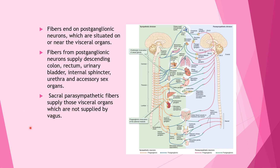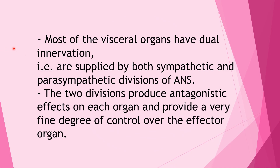Most visceral organs have dual innervation — they are supplied by both the sympathetic and parasympathetic divisions of the autonomic nervous system. The two divisions produce antagonistic effects on each other and provide a very fine degree of control over the visceral effector organ.